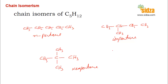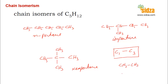Chain isomerism is not possible for hydrocarbons from C1 to C3. If you have a C1, C2, or C3 molecule, you cannot have different arrangements. For example, with ethane or propane, you cannot draw any other different structure. Chain isomers are possible for molecules which have four carbon atoms or more. As the number of carbon atoms increases, the number of chain isomers also increases.